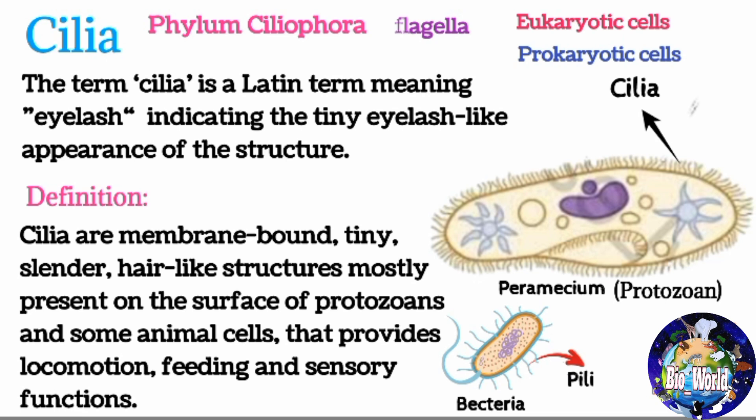Cilia can occur either in short transverse rows, in the form of a membrane, or in groups. The movement of cilia mostly occurs in a rhythmic manner, and individual cilia do not move independently.